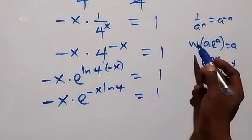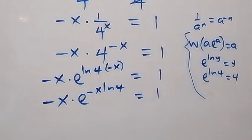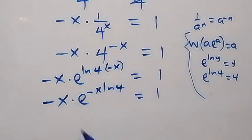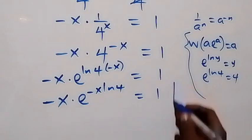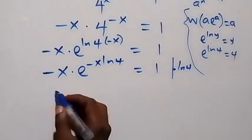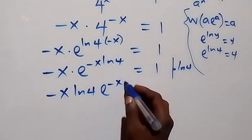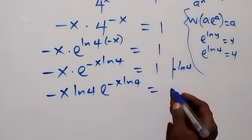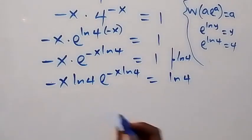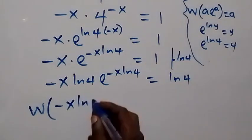To apply the Lambert W function, the power and coefficient must match. The difference here is the factor ln 4. So we multiply both sides by ln 4, giving us minus x · ln 4 times e^(minus x · ln 4) equals ln 4. Now we can introduce the W function of minus x · ln 4.